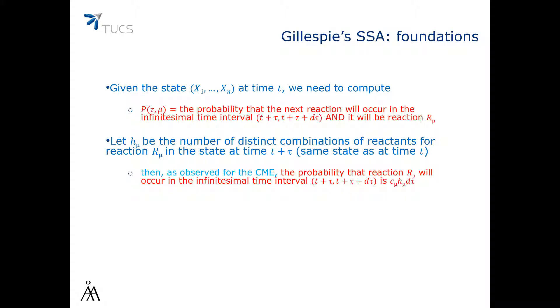As we observed for the chemical master equation, the probability that reaction R_mu will occur in the infinitesimal time interval from t plus tau to t plus tau plus d-tau is C_mu times H_mu times d-tau.